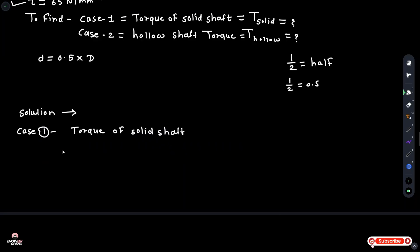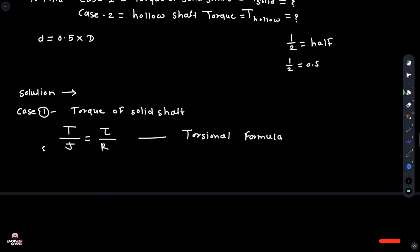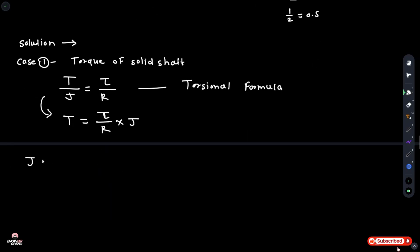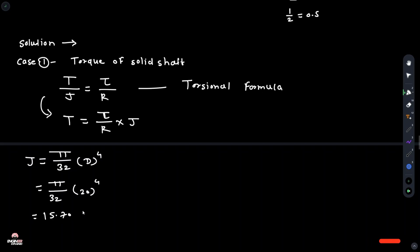To find the torque of the solid shaft, we use the torsional formula: T divided by J equals tau divided by r. Rearranging, T equals tau divided by r, multiplied by J. The polar moment of inertia J equals pi over 32 times d to the 4th power, equals pi over 32 times 20 to the 4th, which equals 15.70 times 10 cubed.